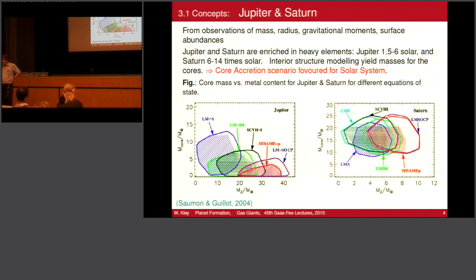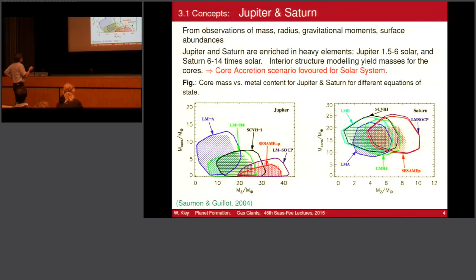So is there evidence that the planets in the solar system have cores? If we talk about the core accretion scenario, we must believe there are really cores in the center of Jupiter and Saturn. From measurements and observations of mass, radius, gravitational moments, and surface abundances, you can infer something about the interior structure.